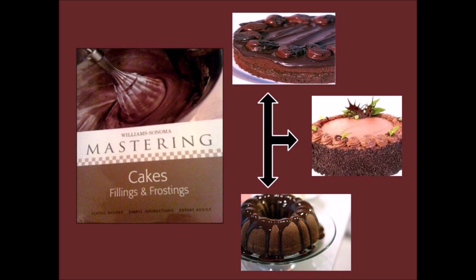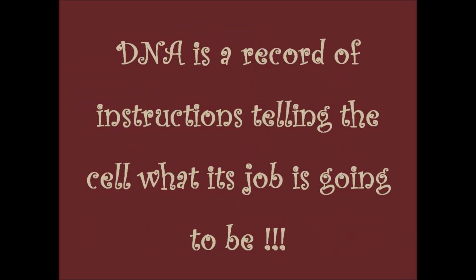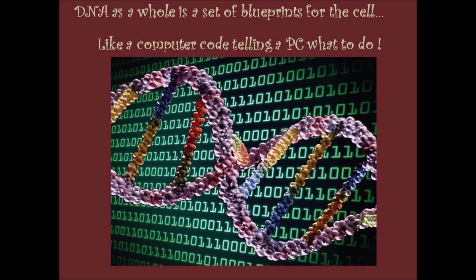Recipes are definitely important to make an exact product. Likewise, in our body, cells are made up of a nucleus, and the nucleus contains chromosomes, wherein the DNA — or deoxyribonucleic acid — is tightly coiled. But each of us are unique because the DNA in each of us has a different recipe. DNA is a record of instructions telling the cell what its job is going to be.